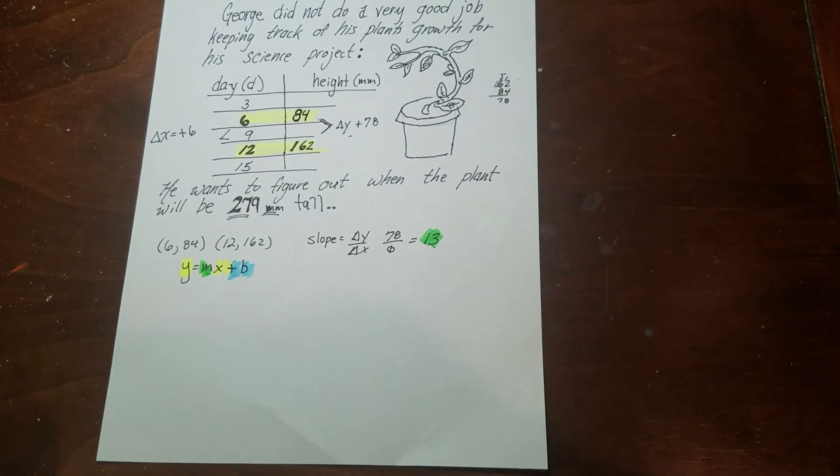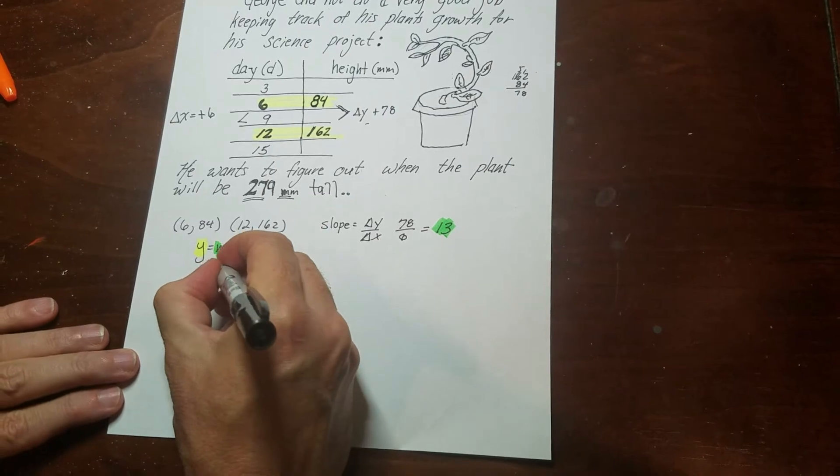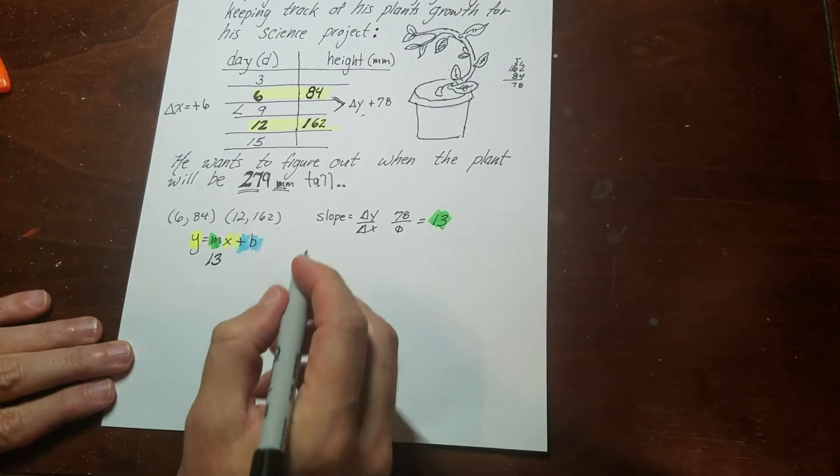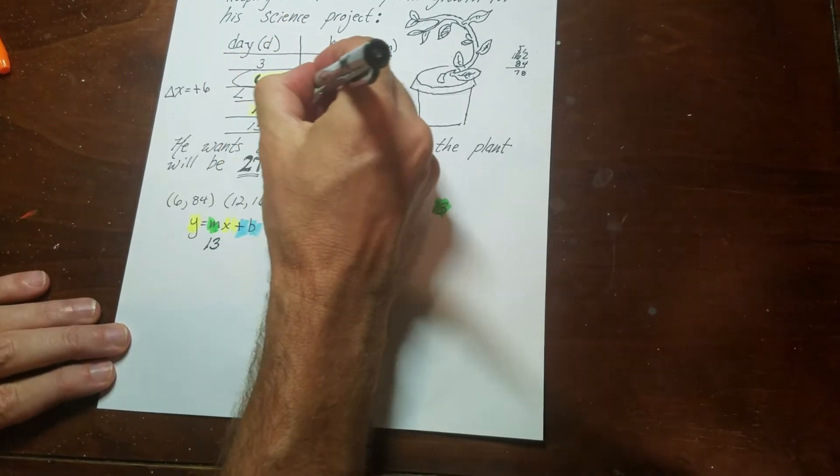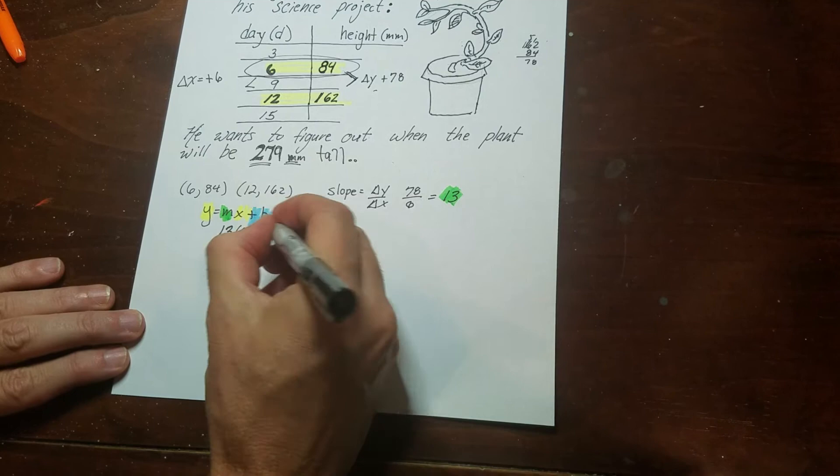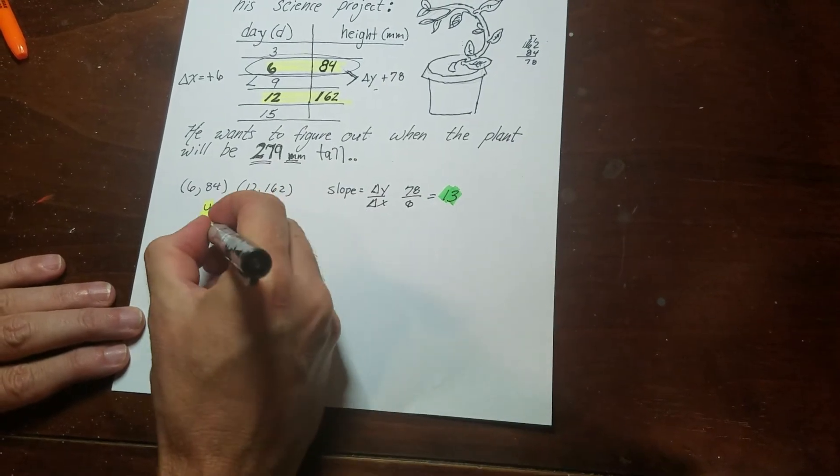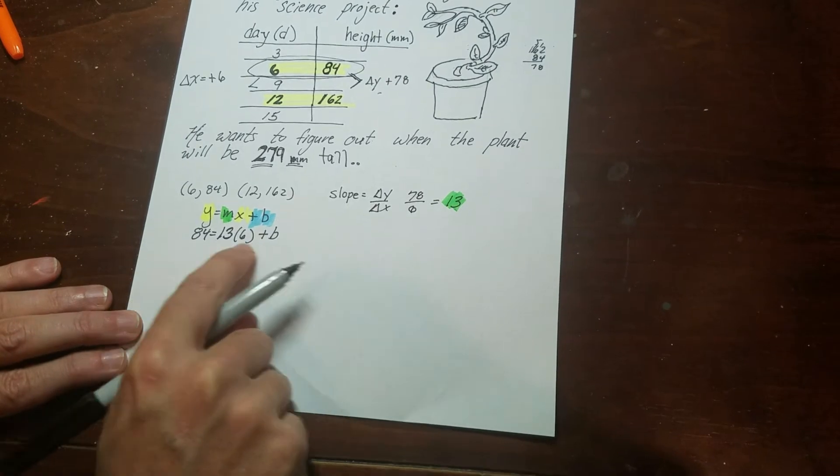So I'm going to go ahead and figure out my rule because I've got a lot of this stuff. I've got the 13 here. And then I'm going to use an x and a y. I can use anything I want. I'm going to go ahead and pick these. So my x is 6. I have no idea what b is. And then this is 84. So I get this equation right here.